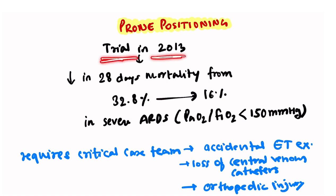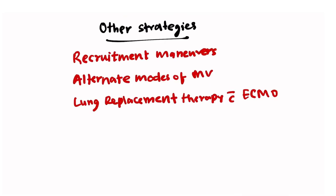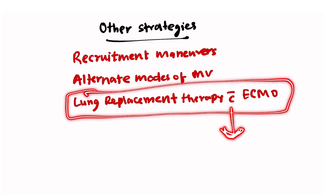A 2013 trial showed reduction in 28-day mortality from 32.8% to 16% in severe ARDS patients with prone positioning, demonstrating significant mortality benefit. However, prone positioning requires a critical care team due to risks of accidental endotracheal tube extubation, loss of central venous catheters, and orthopedic injuries. Other strategies such as recruitment maneuvers, alternate modes of mechanical ventilatory support, and lung replacement therapy via ECMO failed to show consistent mortality benefit.